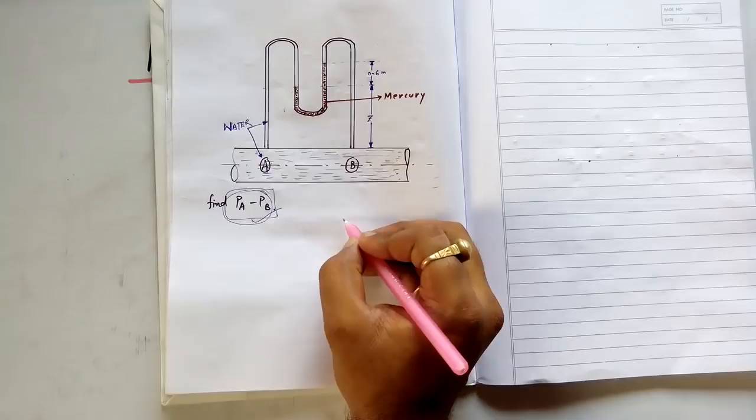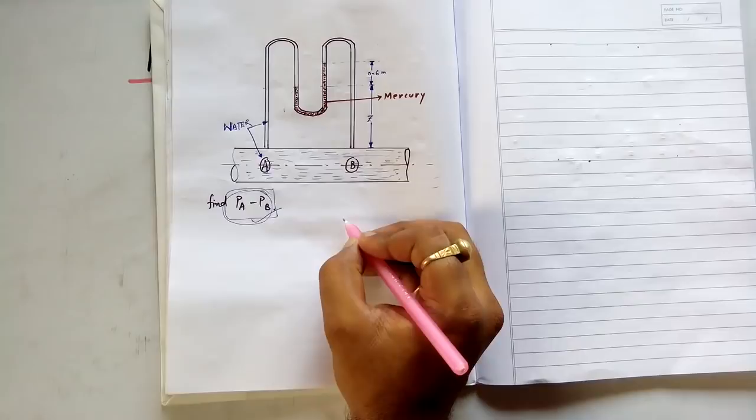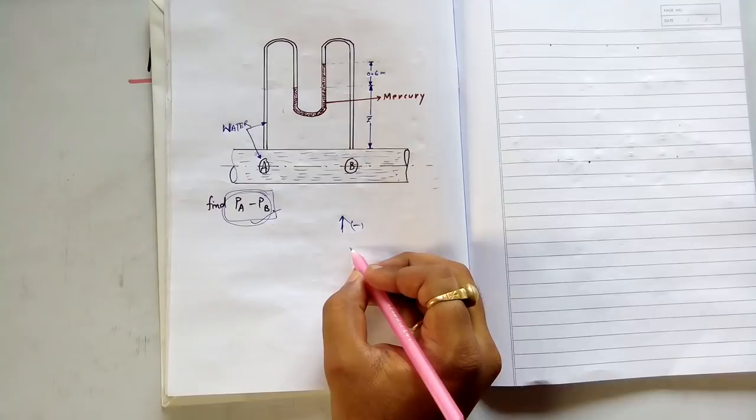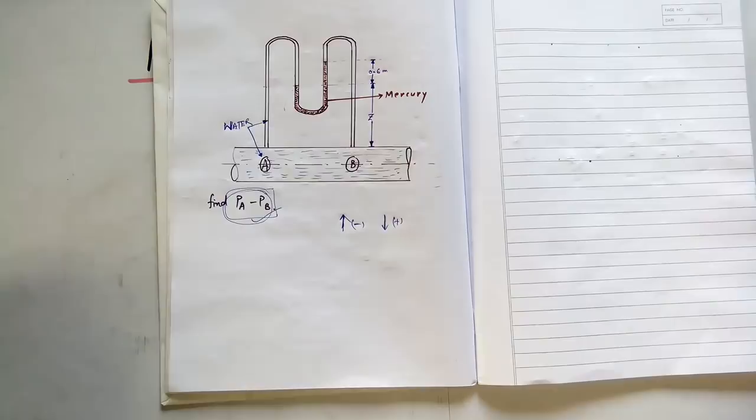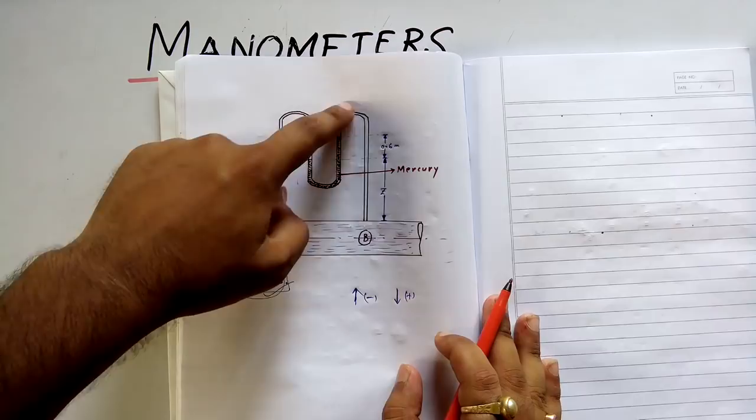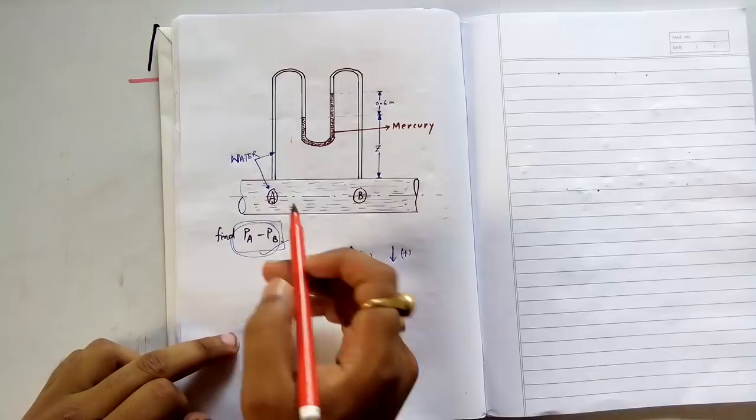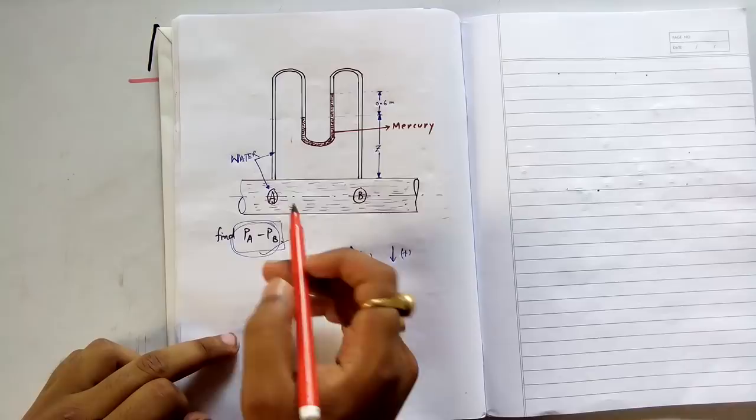There is a very simple technique to find this pressure difference. When you are moving upward, you take it as a negative sign. When you are coming down, you take it as a positive sign. We will move gradually along the length of this U-tube manometer. The pressure at the start is P_A.